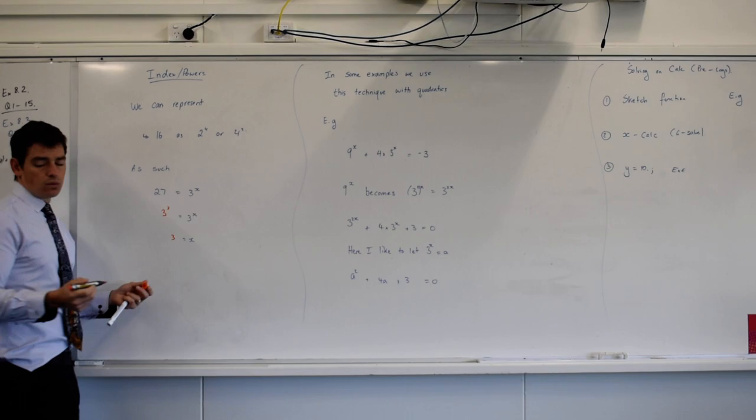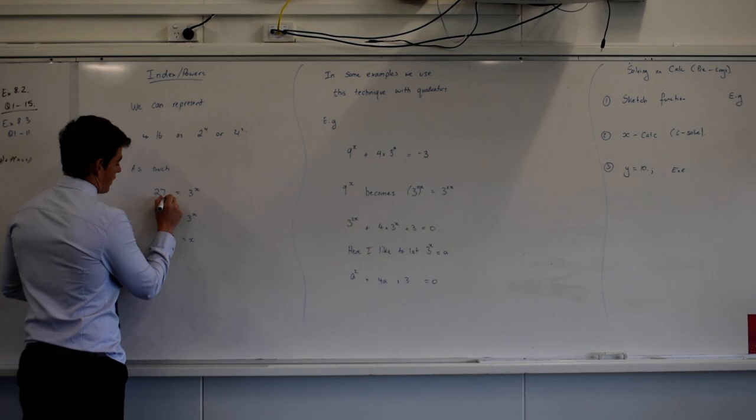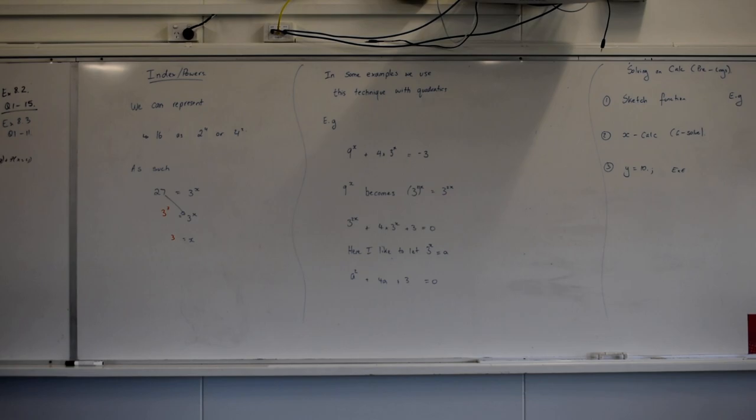So at this line here we can cancel the 3's on both sides. So what we're looking for is can we get this number into a base of 3 of some variety? Happy with that? Change the base.